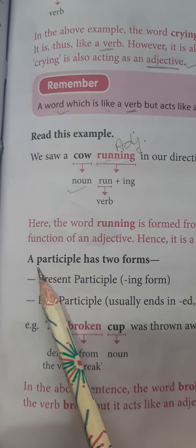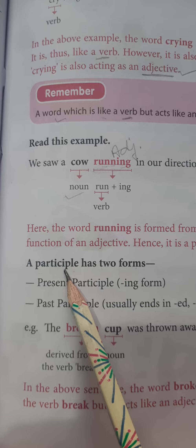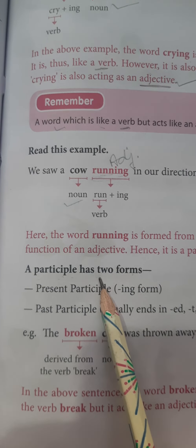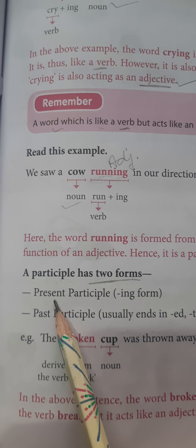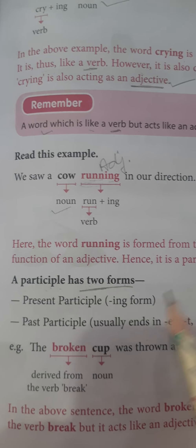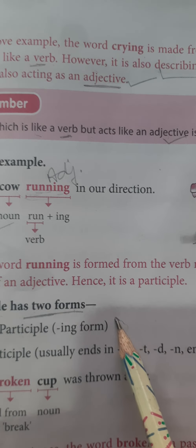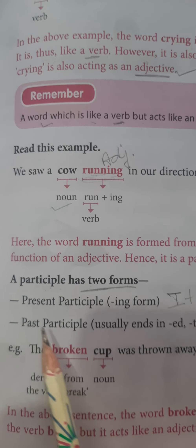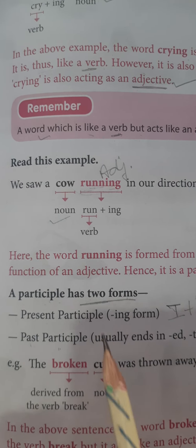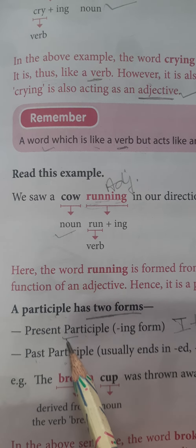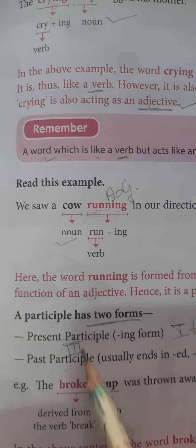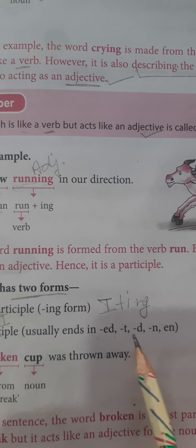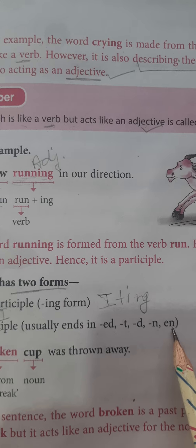A participle has two forms. Participle ki do forms hoti hain. Participle works as an adjective — we have come to know that. The first is the present participle — base form of the verb plus 'ing' — it is called present participle. The next is past participle. Past participle ka matlab hota hai the third form of the verb. Jo third form of the verb hoti hai usko hum past participle kehte hain, aur ismein usually it ends in 'ed', 't', 'd', 'n', and 'en'.